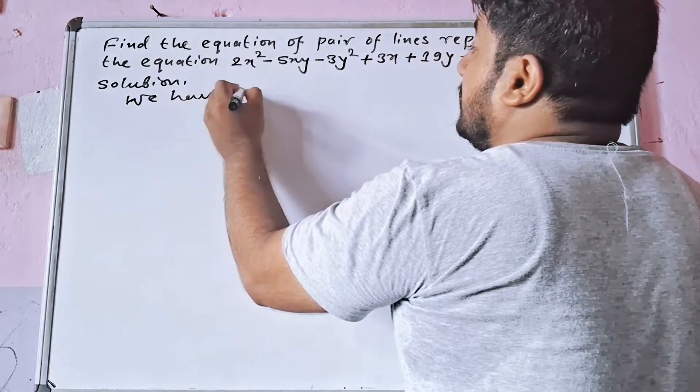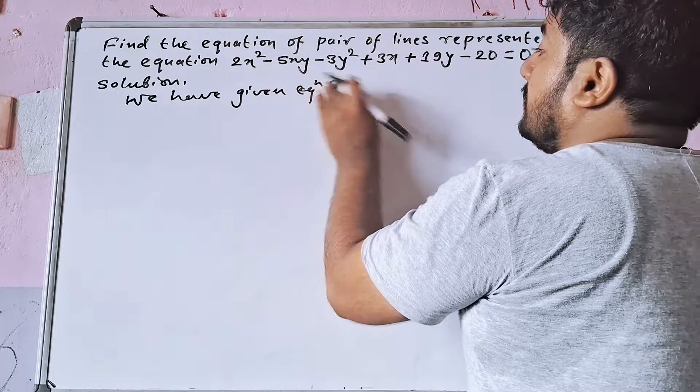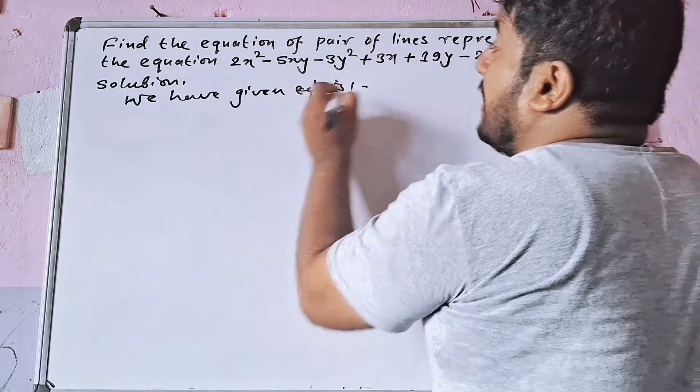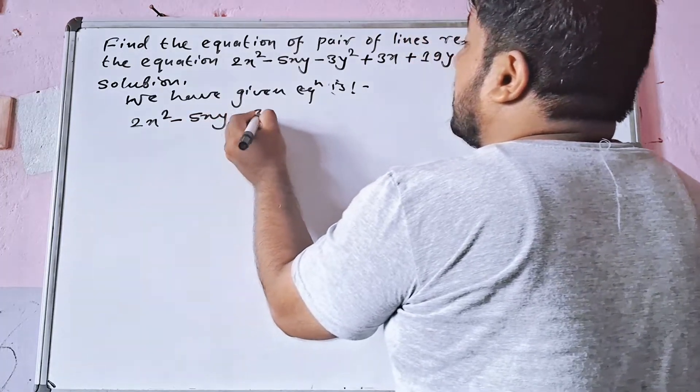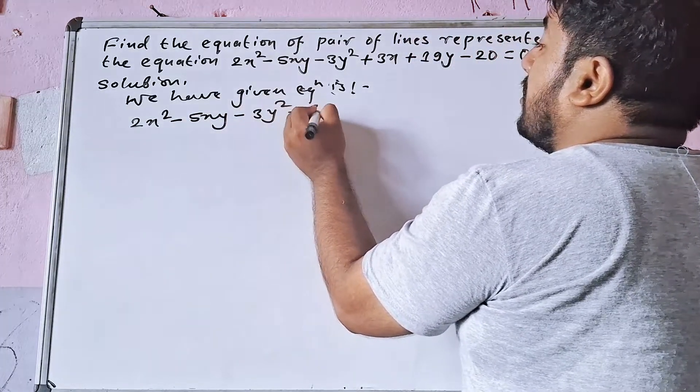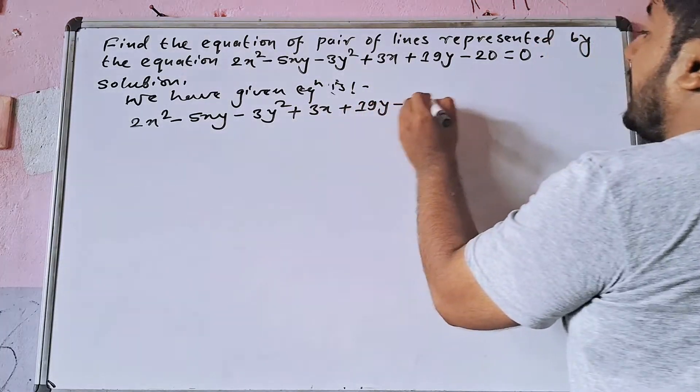We have given equation is 2x squared minus 5xy minus 3y squared plus 3x plus 19y minus 20 equal to 0.